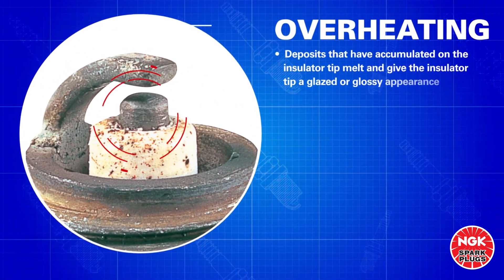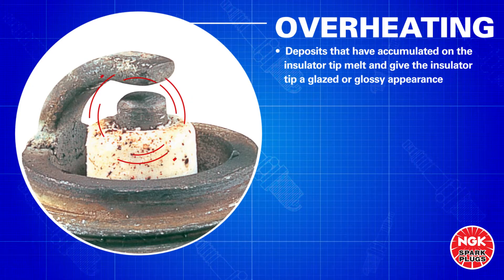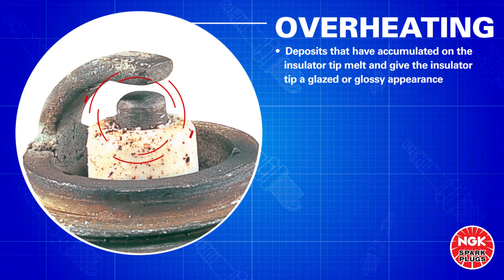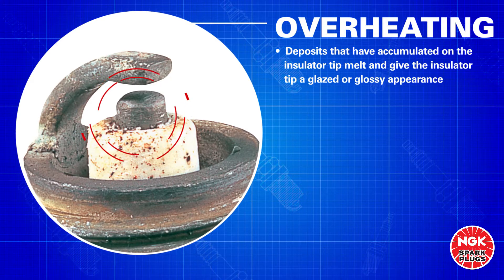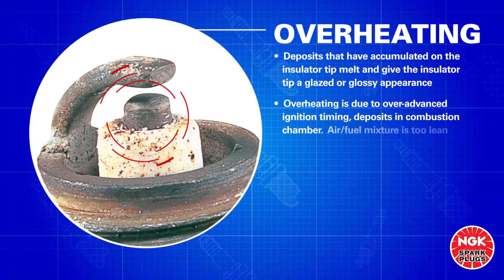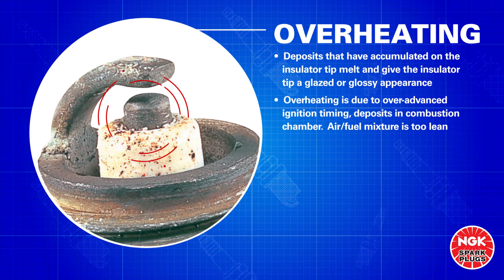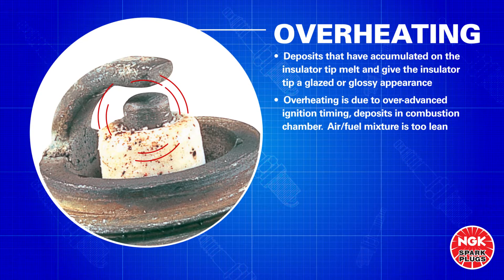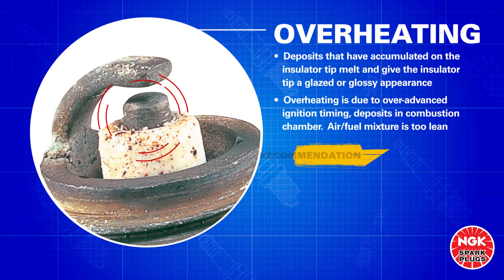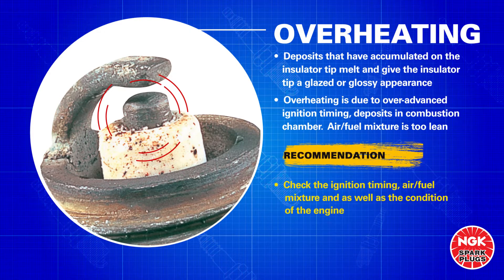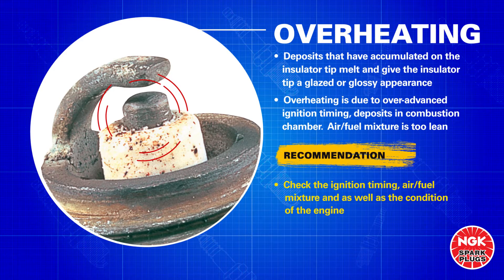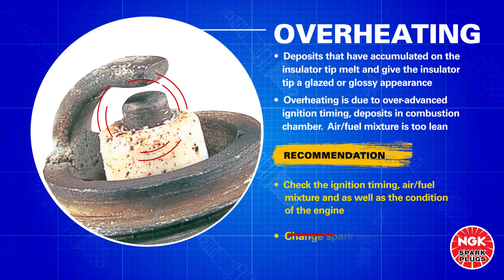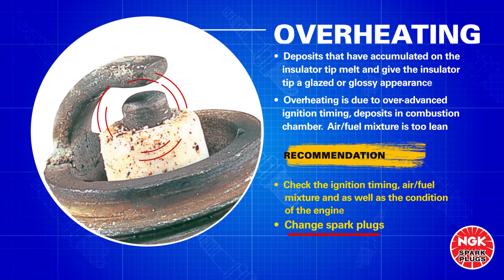Overheating. When a spark plug overheats, deposits that have accumulated on the insulator tip melt and give the insulator tip a glazed or glossy appearance. Overheating is due to over-advanced ignition timing, deposits in the combustion chamber, or an air-fuel mixture that is too lean. It is recommended to check the ignition timing, air-fuel mixture, and the condition of the engine. You also need to change the spark plugs.